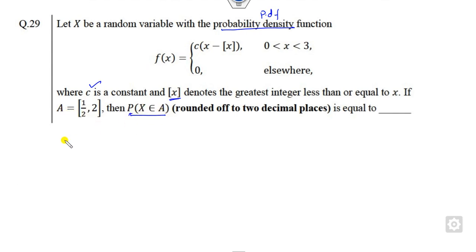This is my greatest integer and your A is given to you. Your target is to find the probability which lies between half and 2. That is very simple.